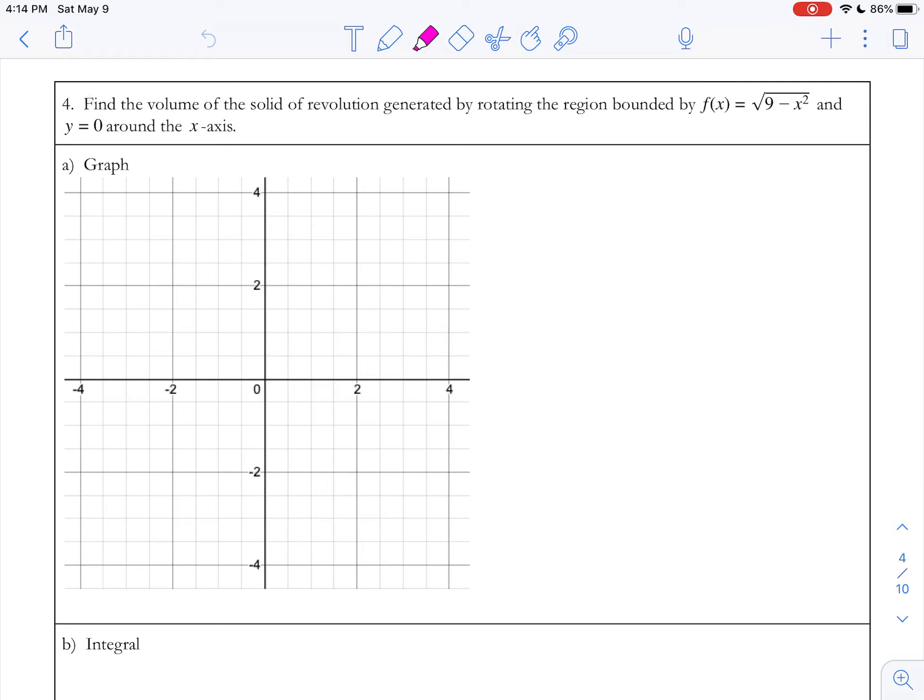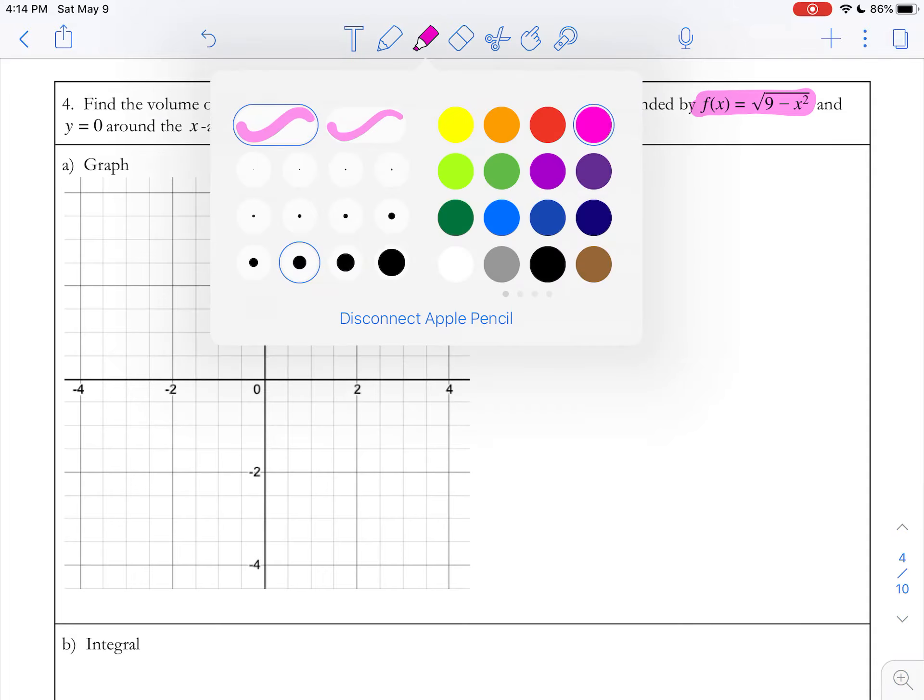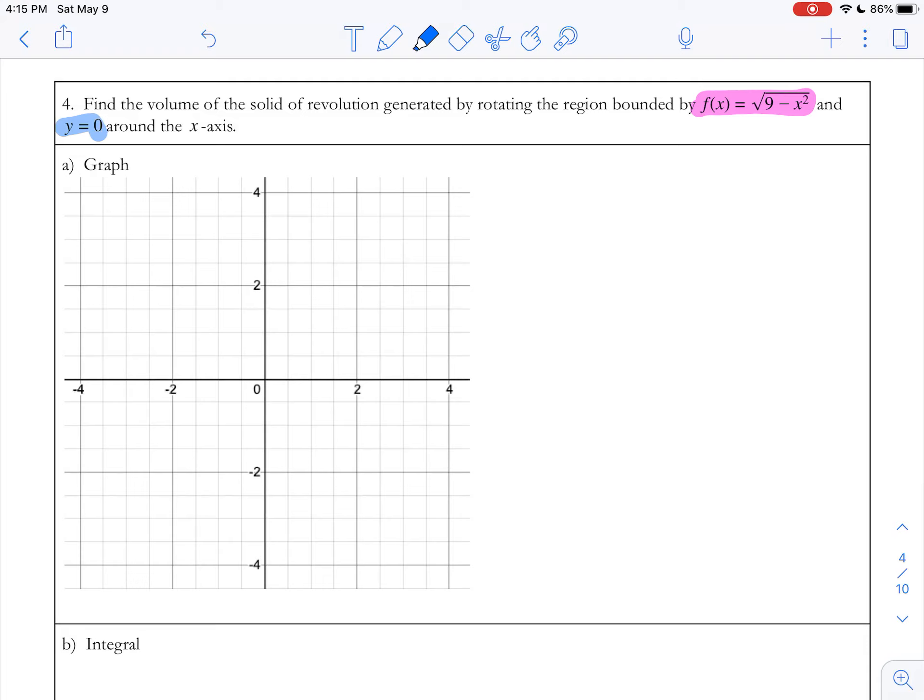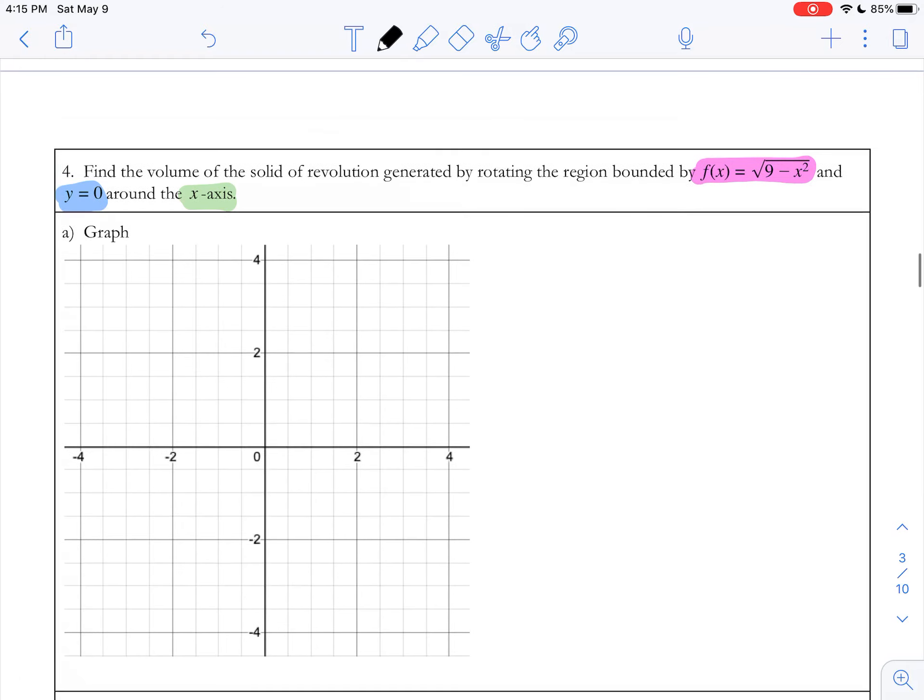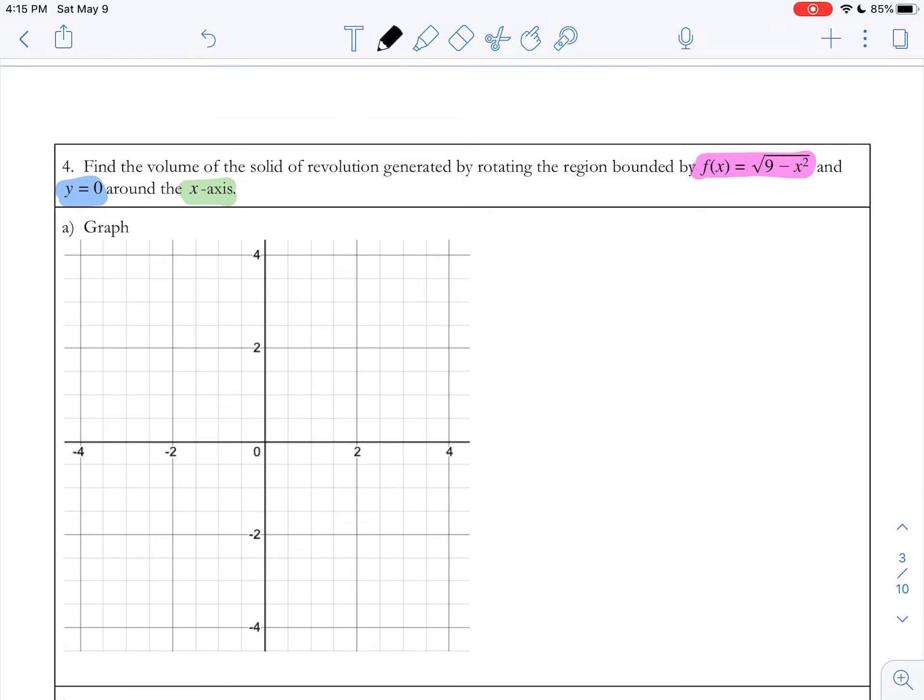Question number four says, find the volume of the solid of revolution generated by rotating the region bounded by f(x) = √(9 - x²) and y = 0 around the x-axis.